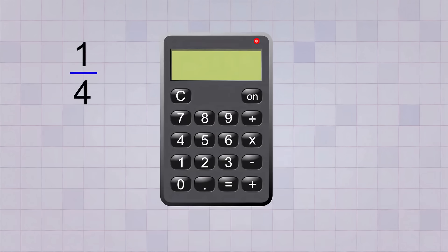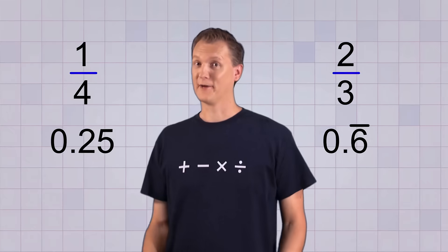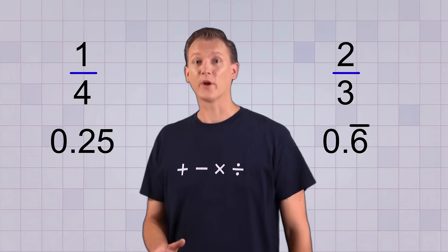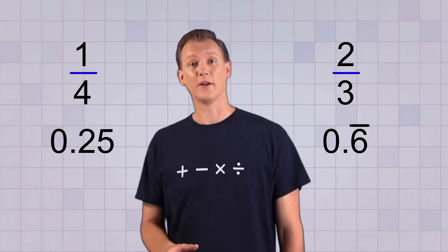Let's try a couple with a calculator and see what we get. To convert 1 fourth, we just punch in 1 divided by 4 and we get 0.25. To convert 2 thirds, we just punch in 2 divided by 3 and we get 0.6's. Looks like we have another one of those repeating decimals. Yep, this way is certainly easier and quicker too. But it's important to know how to do it both ways.